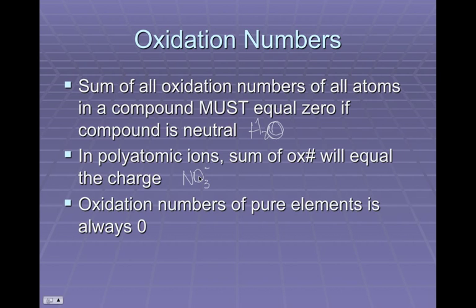Oxidation numbers of pure elements — elements that are all by themselves with only one kind of atom present — are zero. Like pure copper: oxidation number of zero. Or the oxygen you breathe, O₂ — yes, there's a subscript 2, but there's still only one kind of atom, so the oxidation number is zero.